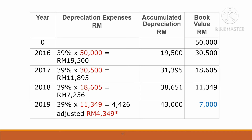For 2017, depreciation is calculated based on book value: 39% times RM30,500, giving RM11,895. Cumulative accumulated depreciation becomes RM31,395. For 2018, we apply the rate to the previous year's book value, giving RM7,256. Cumulative accumulated depreciation after three years is RM38,651.